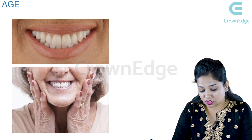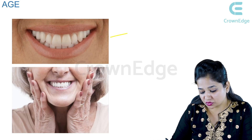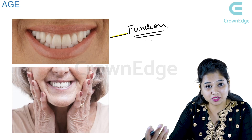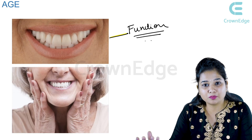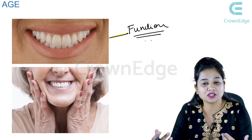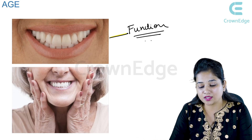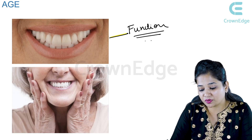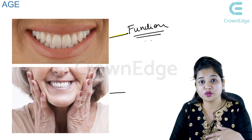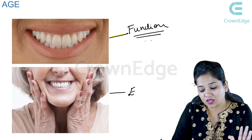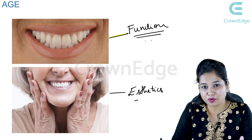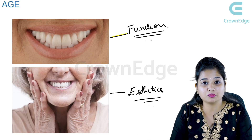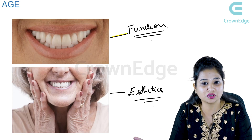For example, if a young patient is given a denture with maximum function but no aesthetics, they will not accept it well. Denture prognosis mainly depends on patient acceptance. Similarly, if you give an older patient beautiful aesthetics but no function or comfort, the denture won't be well accepted either. This leads to failure of complete denture fabrication.